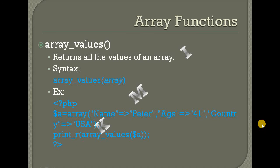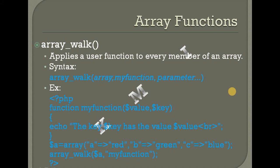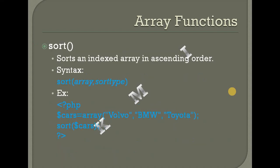All the keys of an array, all the values of an array. Then array_walk — applies a user function to every member of an array. All the array is created and all the elements are applied.